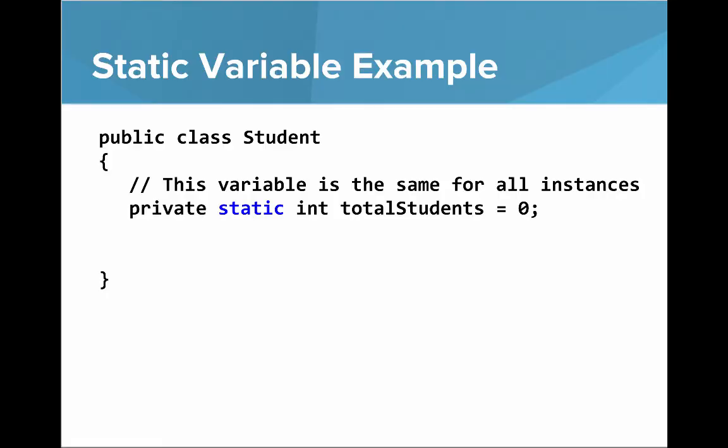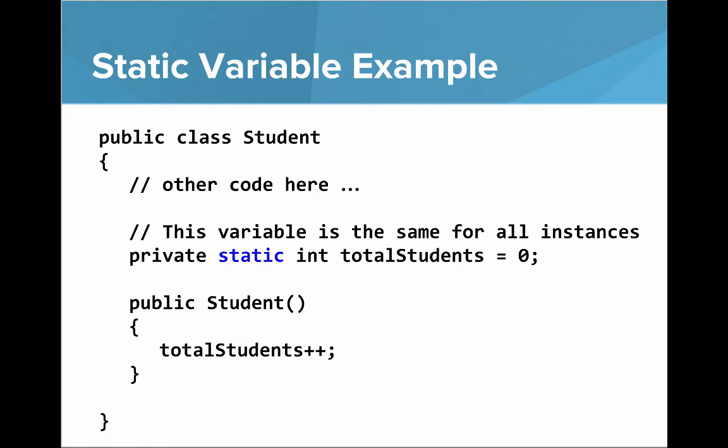Let's dive into that with a static variable example. Here we have the template for our student class — public class Student. We've created a new static variable: private static int totalStudents equal to zero. This variable is the same for all instances; it's going to track how many total student objects have been created.